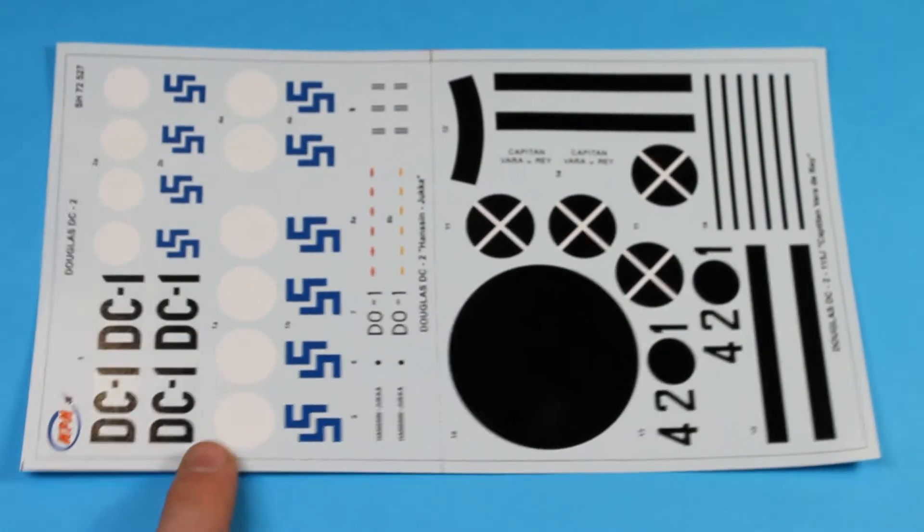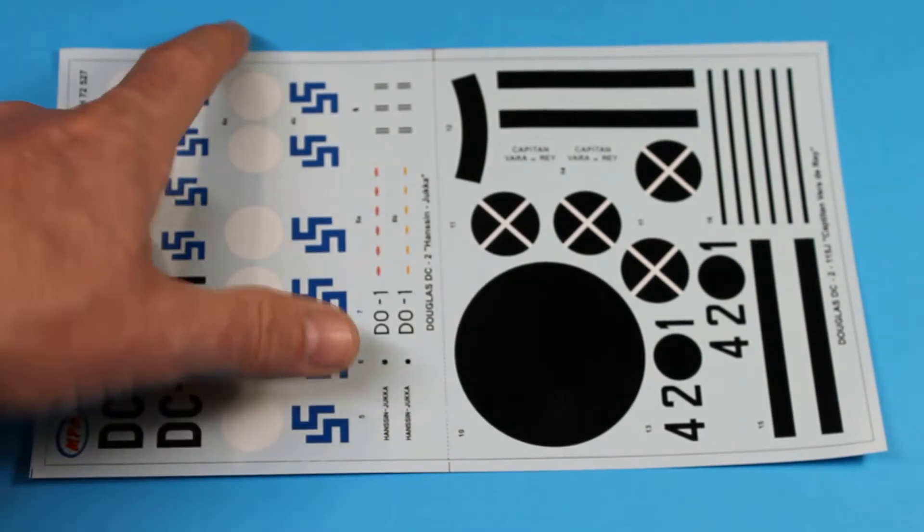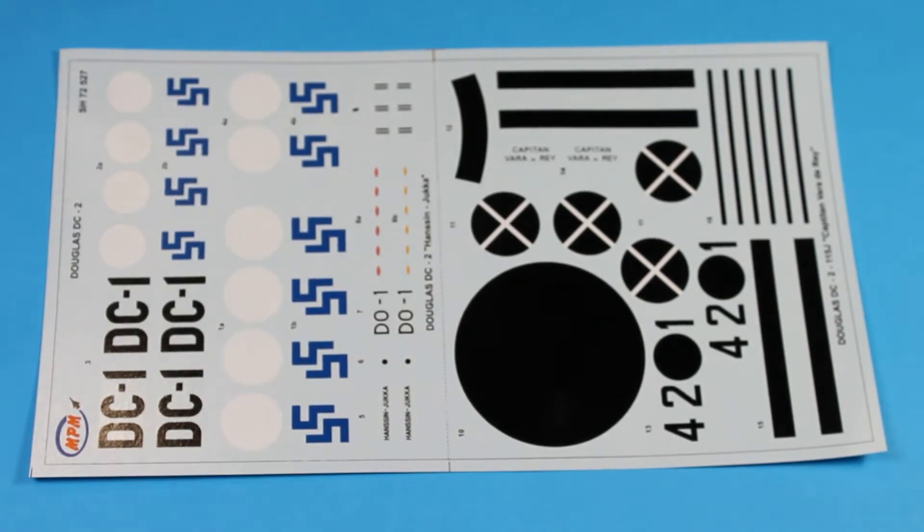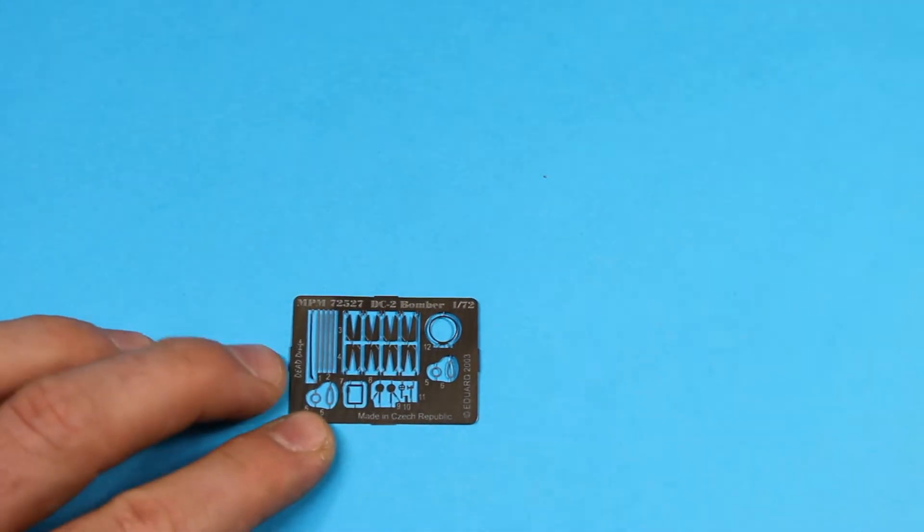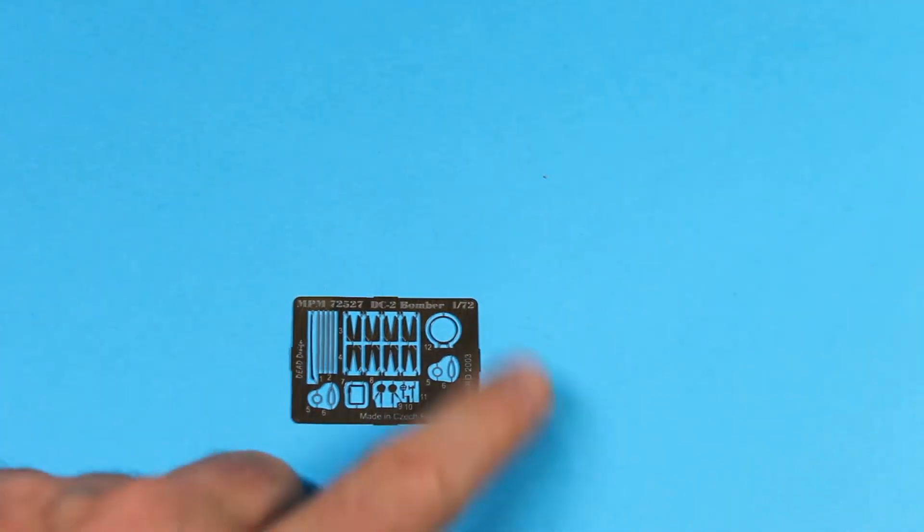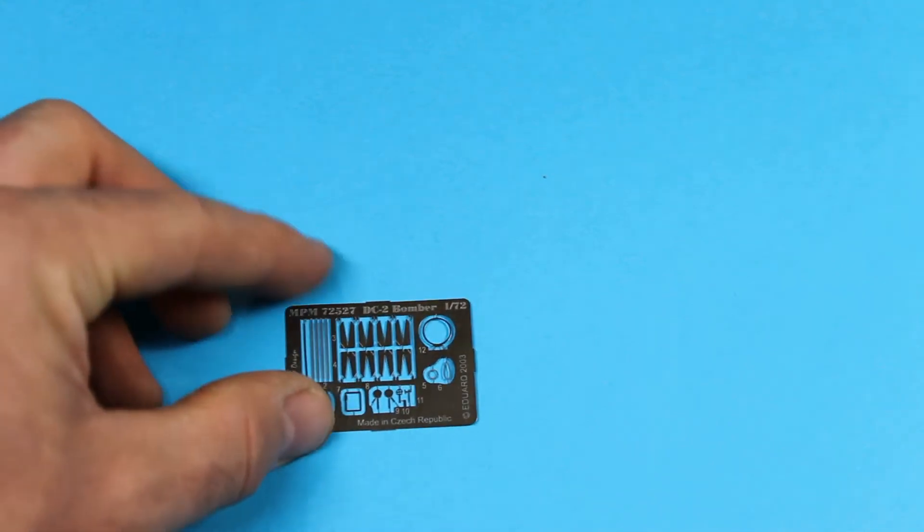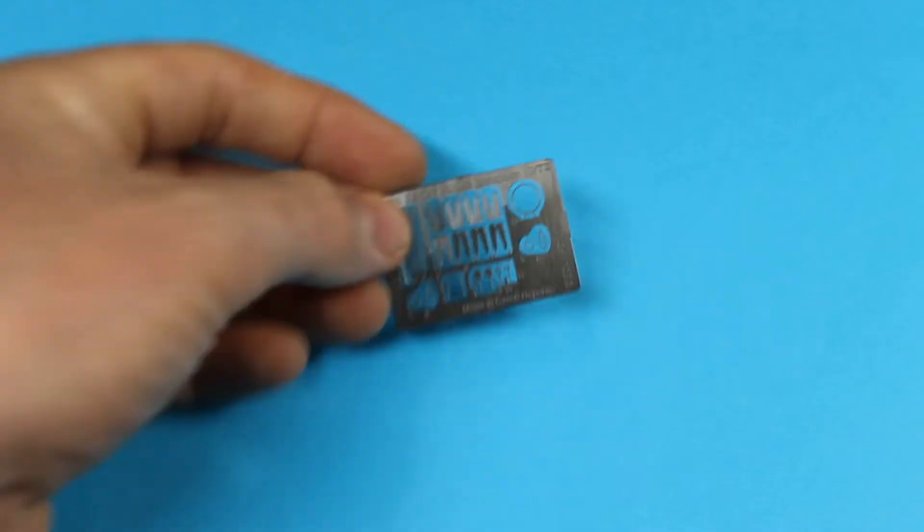Then we've got the Finnish decals here. You can see the swastikas in two halves and they go on their white backing. The small photo etched fret here just covers a few bits for the outside of the aircraft, as well as fins for the bombs.